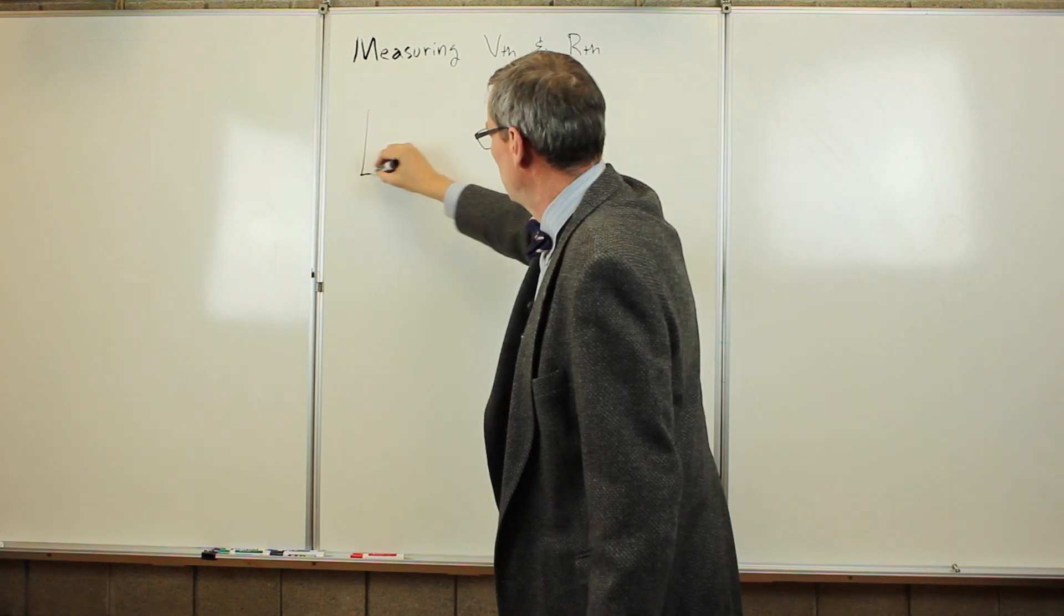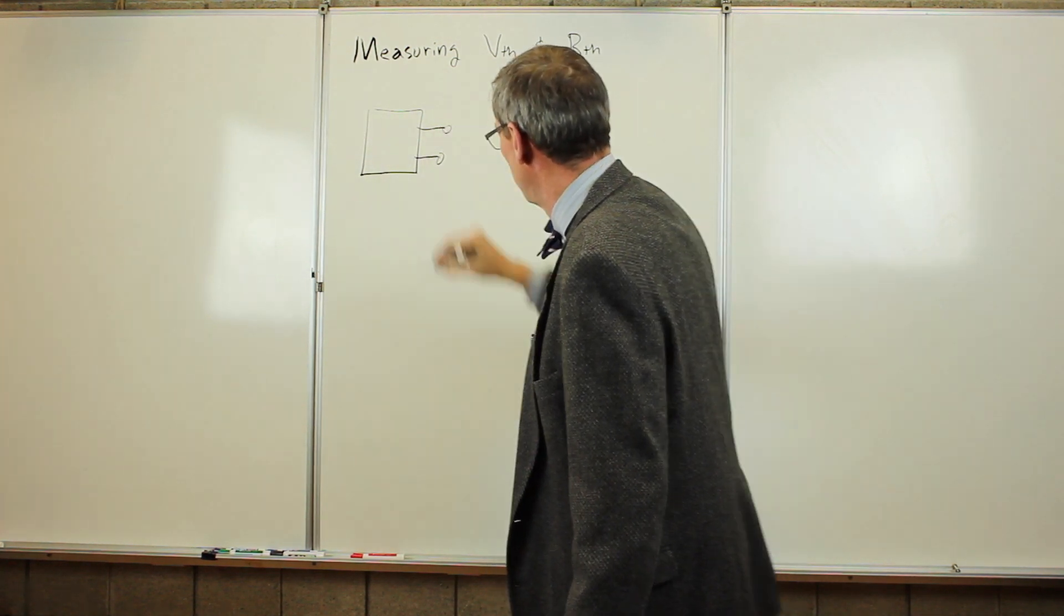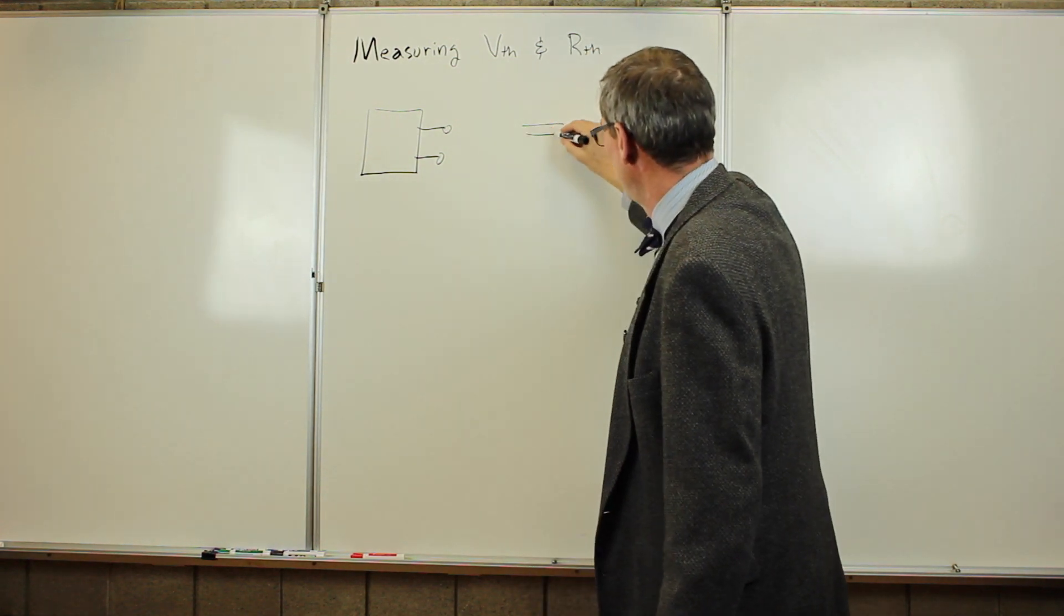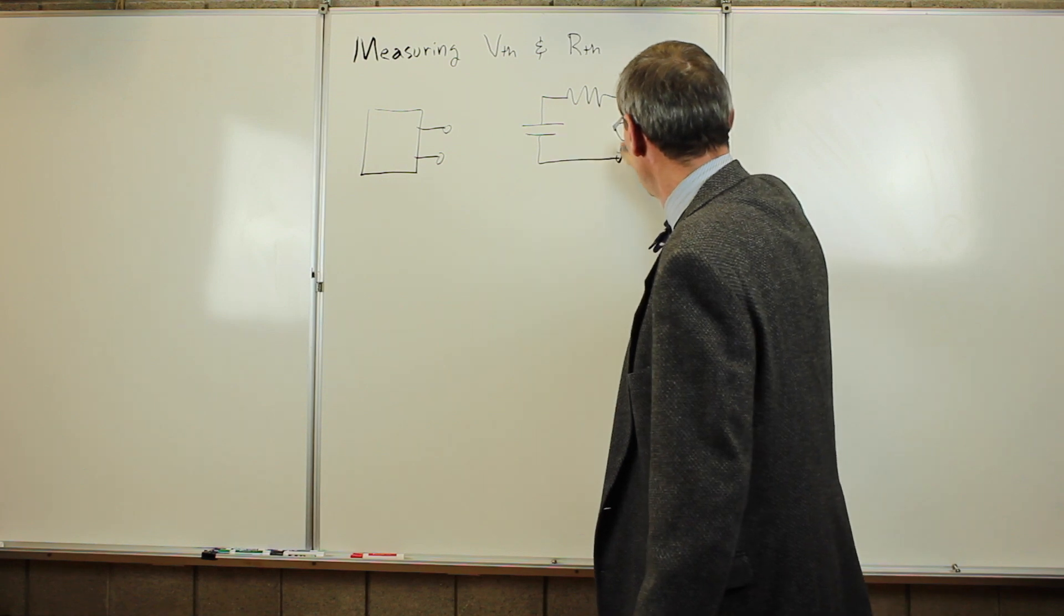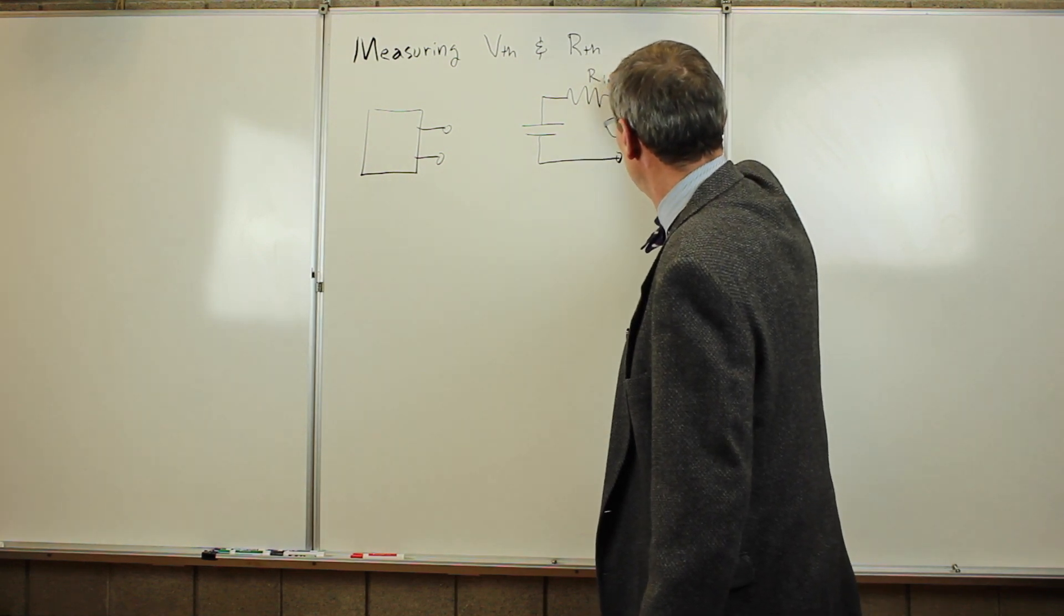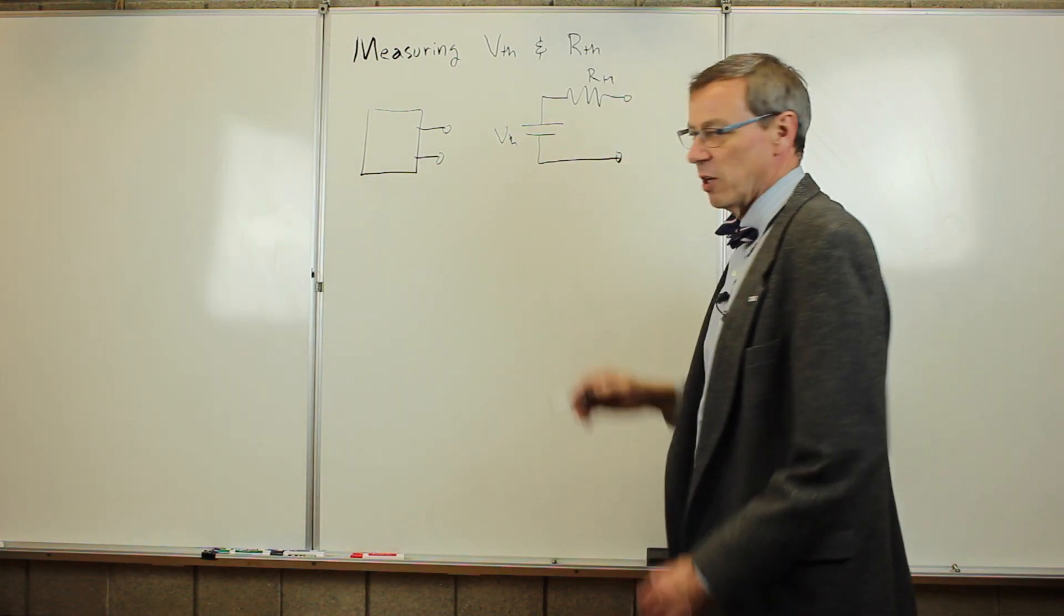We start with some black box circuit, two outputs. It doesn't really matter what it is. And we know the Thevenin equivalent is a voltage source in series with a resistor. So R Thevenin and V Thevenin. And we'd like to determine what those are.